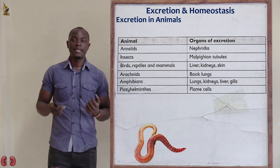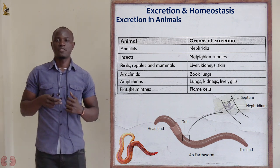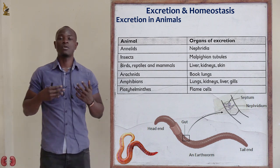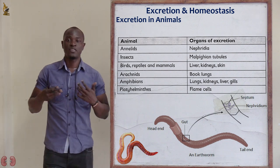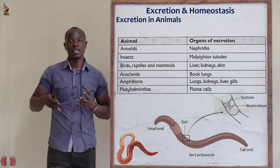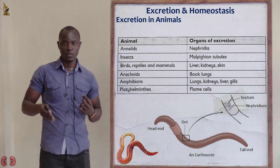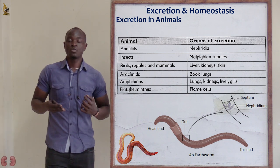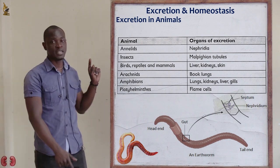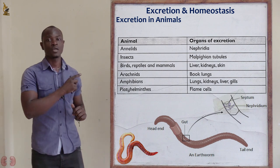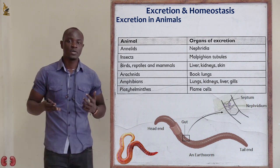First, let's look at annelids. Annelids mainly comprise worms. Annelids use an organ called nephridia for the removal of waste products from their bodies. In classification, we will expand more on nephridia — how it looks and how it functions to remove waste products from the bodies of worms.